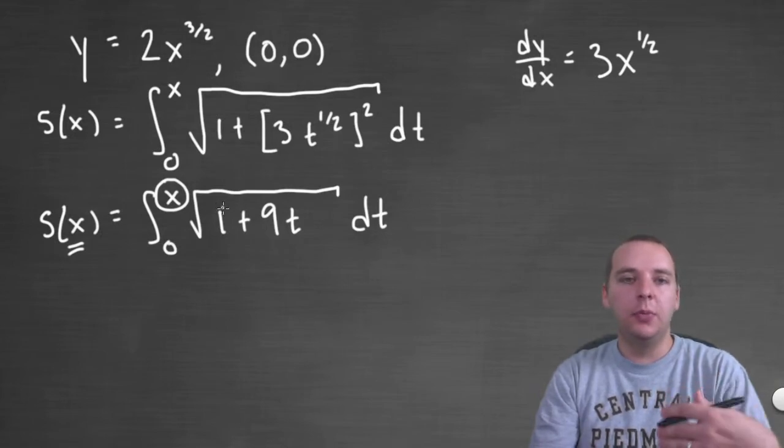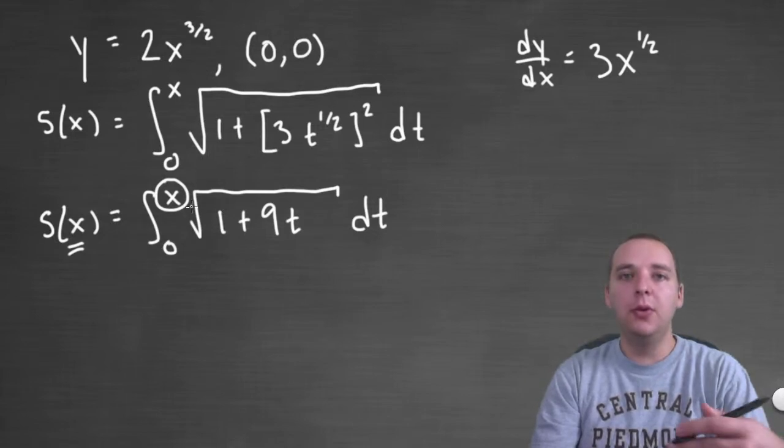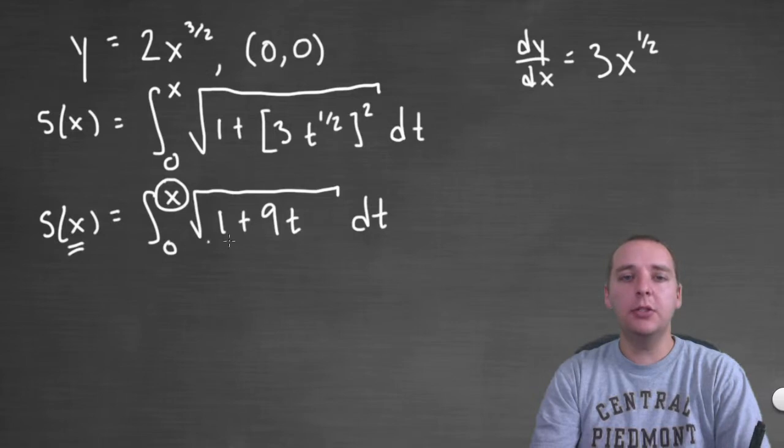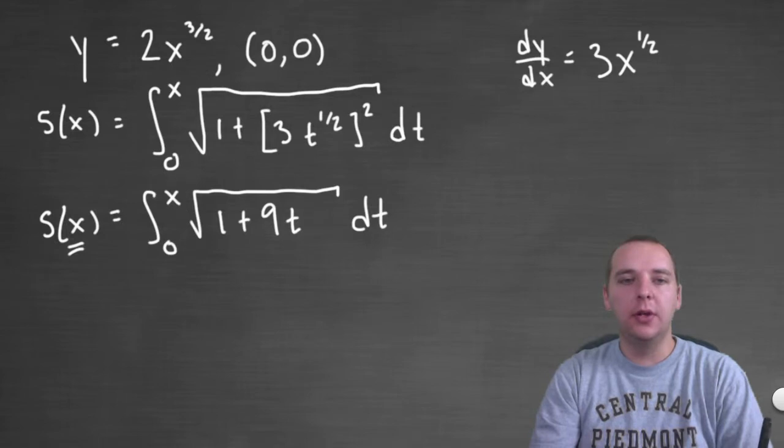And so whenever an x is chosen that x would be plugged in here and this definite integral would be evaluated and we would have our answer. But to keep the person asking for this from having to compute integrals every time an x is chosen let's just go ahead and compute this integral with the x in there. Then we won't have an integral to do we'll literally just have a function of x.